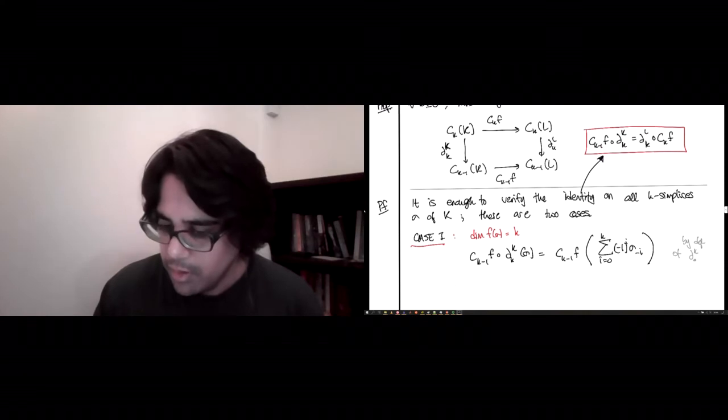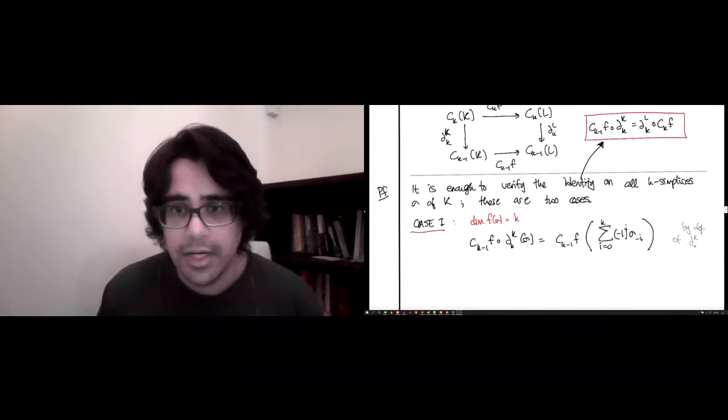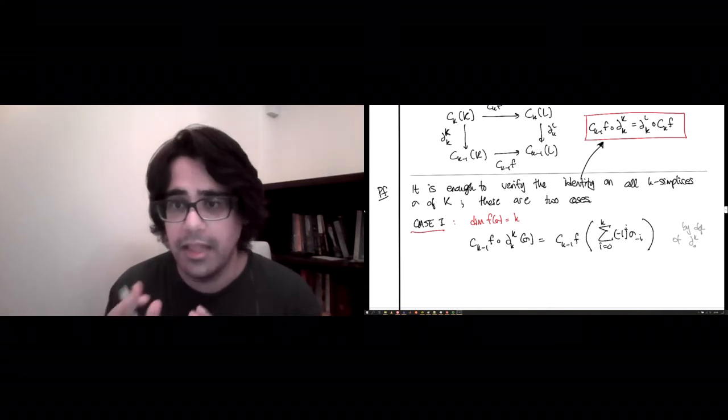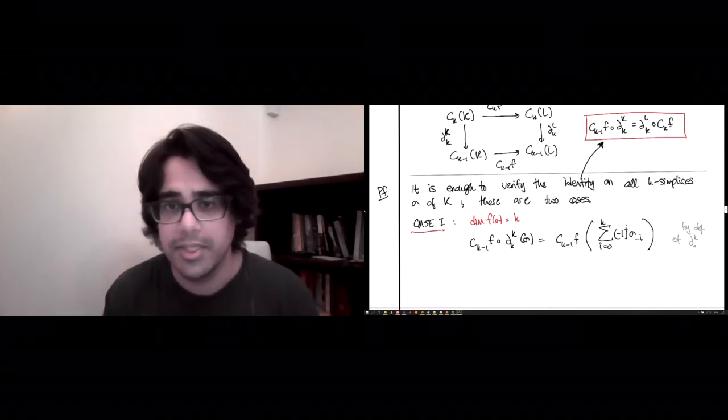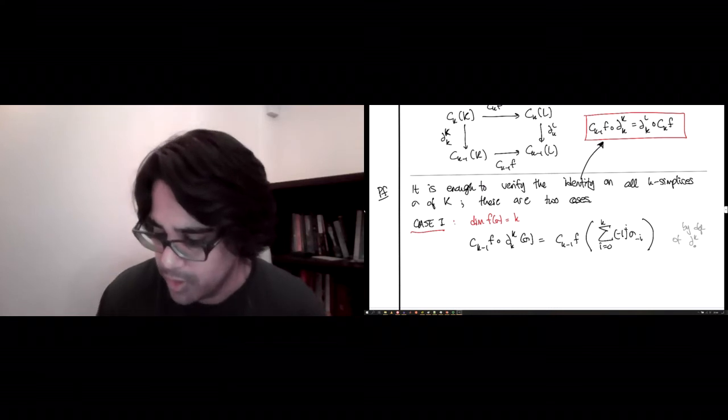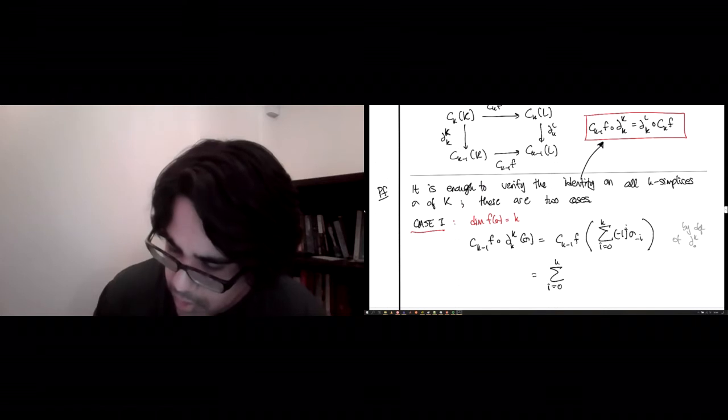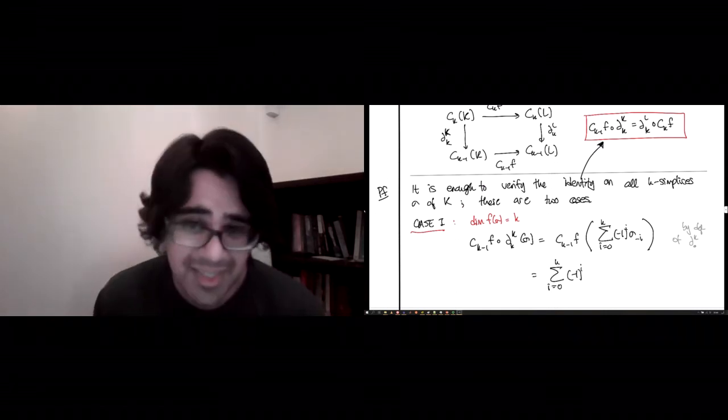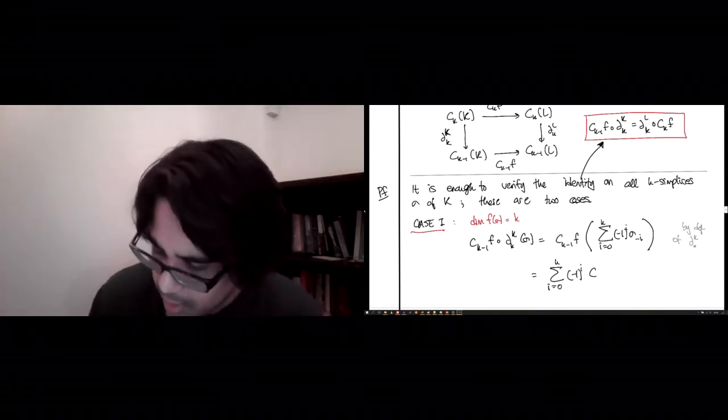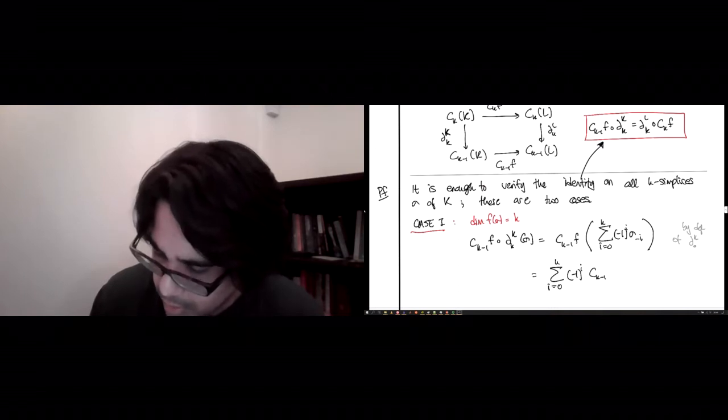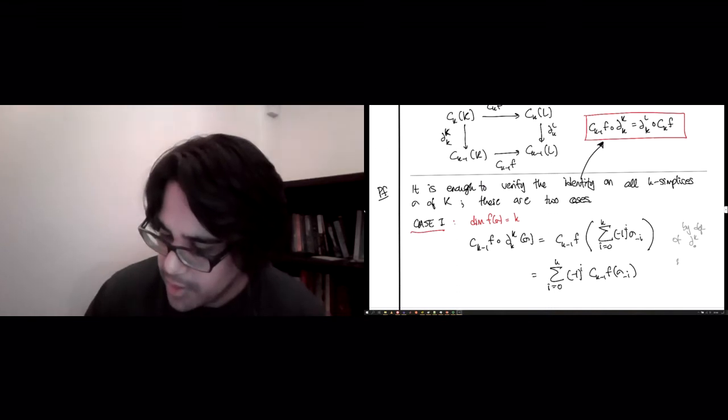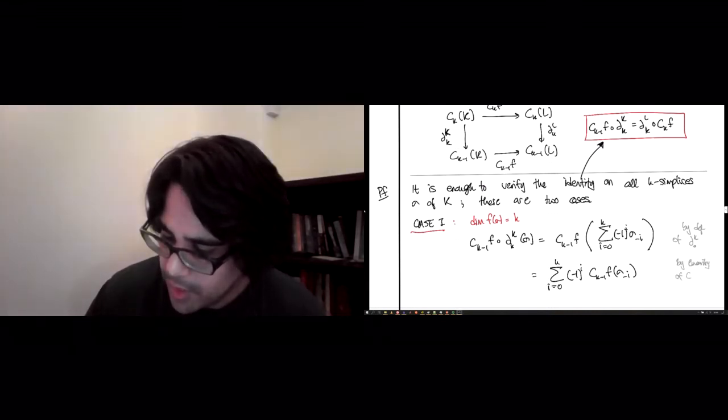Okay, now, great, you have this linear map c_{k-1}(f) and it is being evaluated on the sum of k-1 dimensional simplices. So, of course, we will exploit linearity. So this is the same as pulling the sum out. (-1)^i, if that's just a coefficient, I can take it out. And then c_{k-1}(f) of this simplex σ_i, and this is by linearity of c_{k-1}(f).